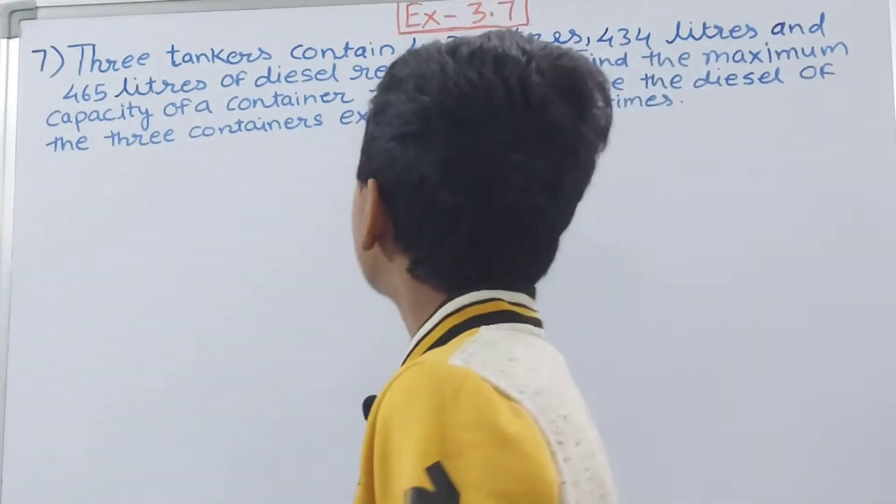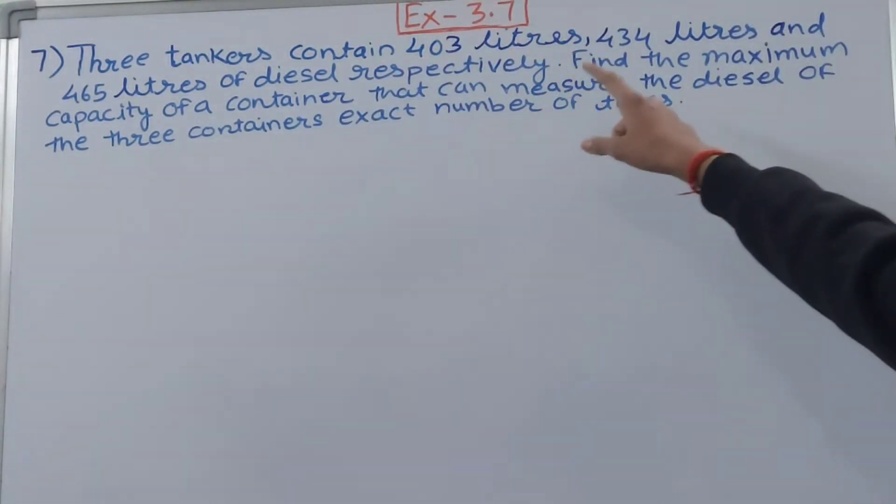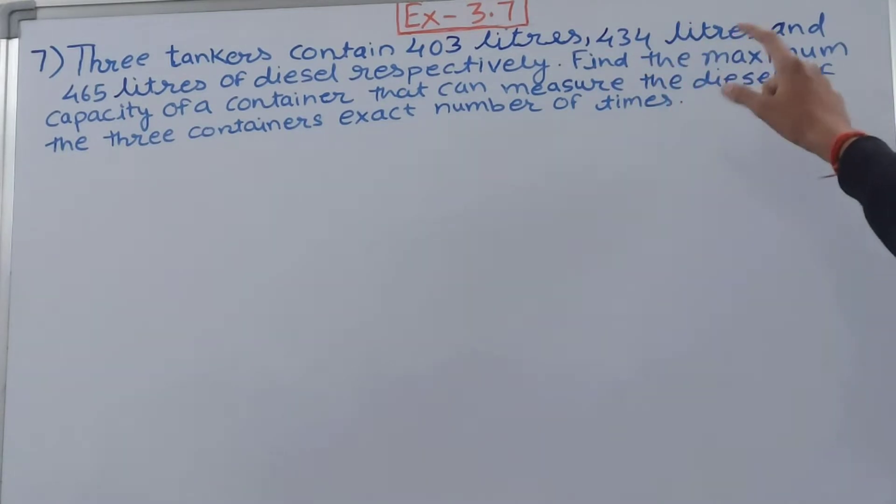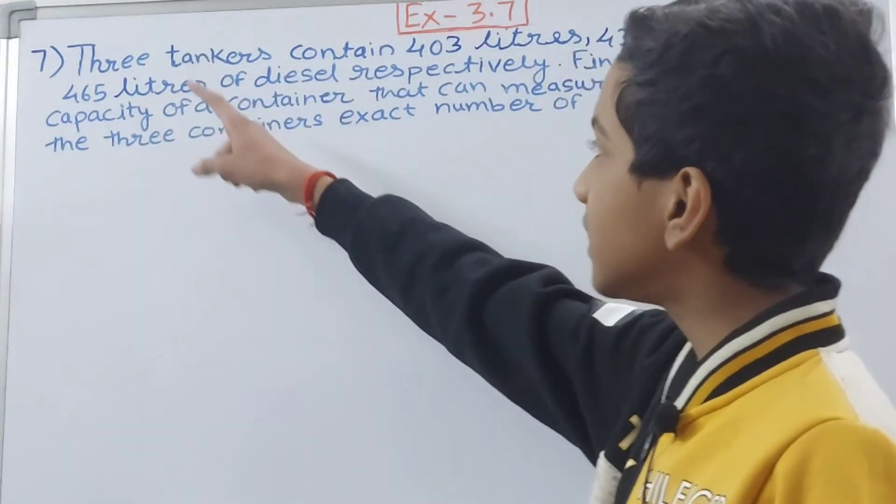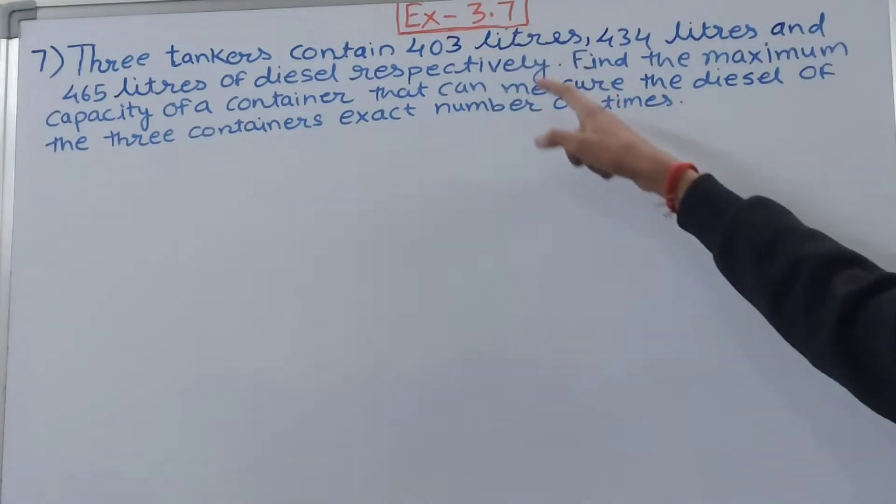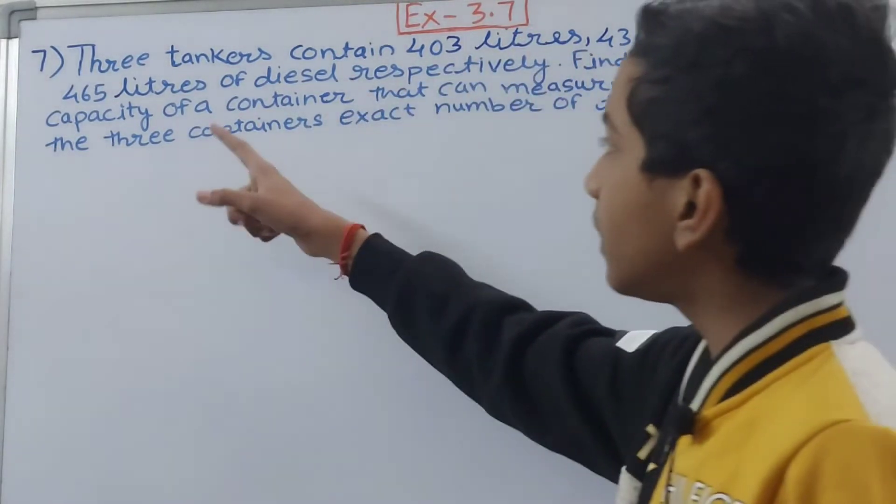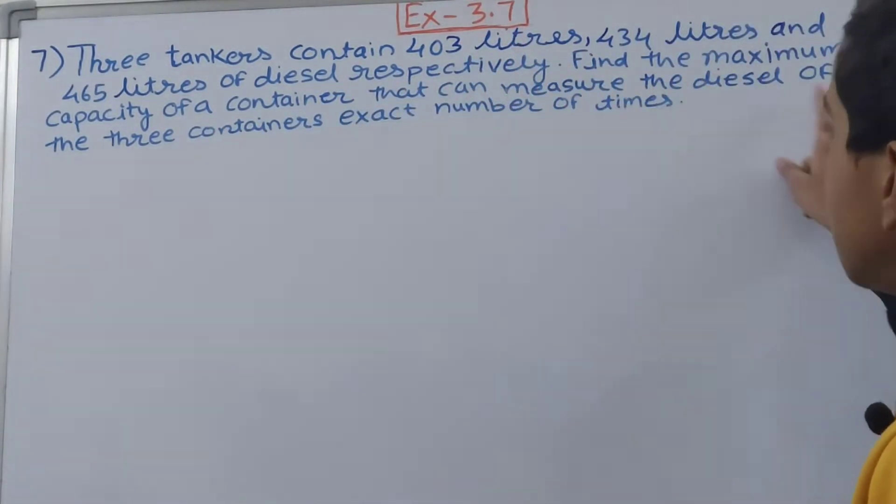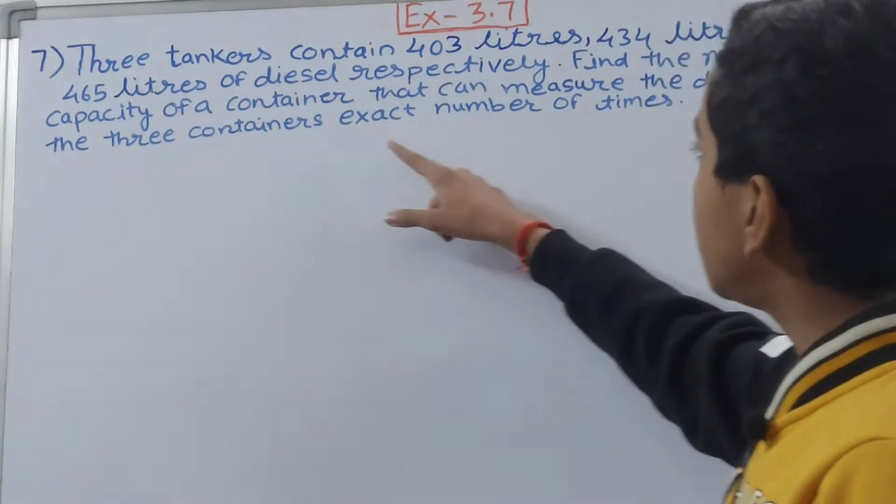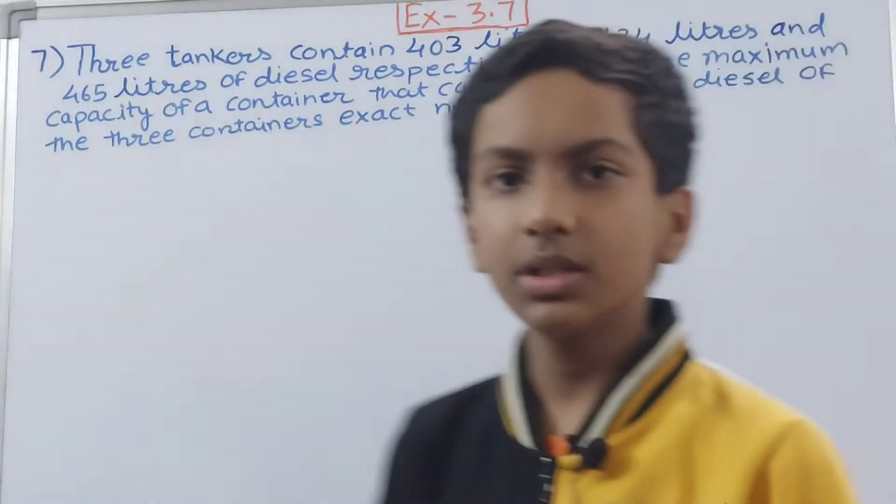This says: Three tankers contain 403 liters, 434 liters and 465 liters of diesel respectively. Find the maximum capacity of a container that can measure the diesel of the three containers exact number of times.